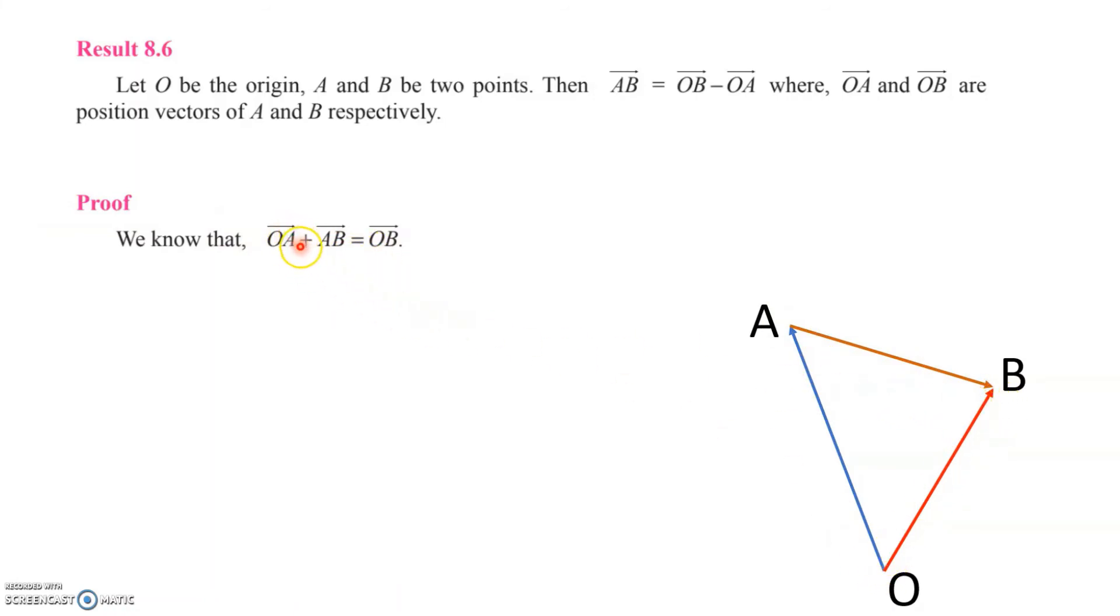Now if we move OA to the other side, then AB equals OB minus OA. Thus we prove that the vector AB equals vector OB minus OA.